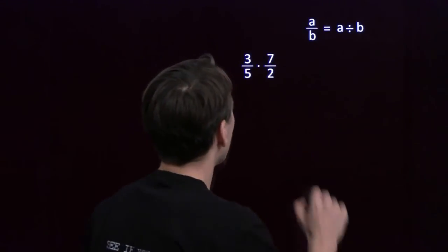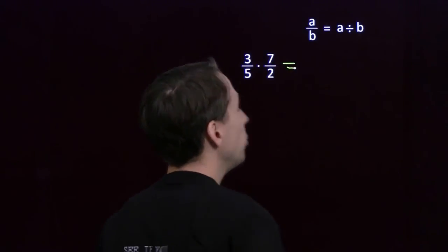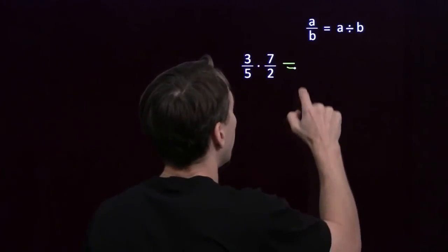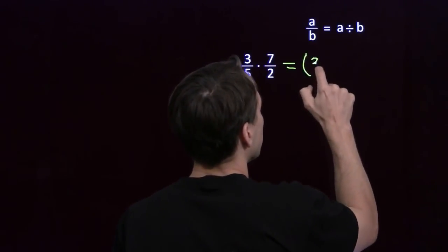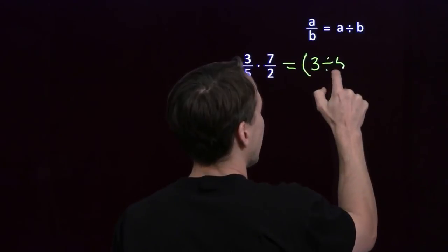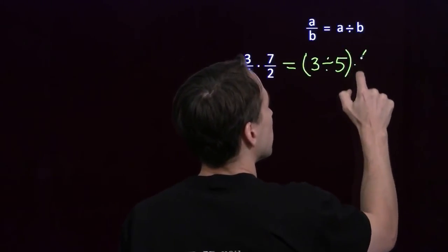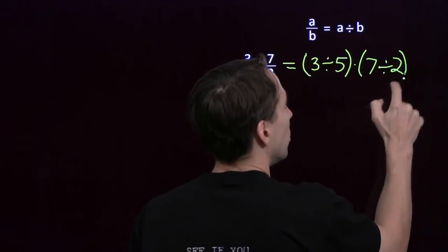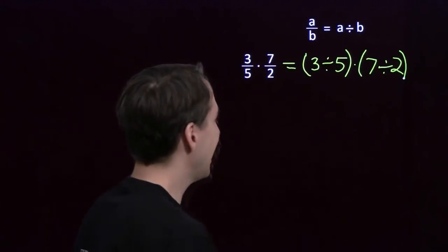Let's try actually multiplying two fractions instead of a fraction times an integer. Let's try this, and we'll do the same thing, right? Because we have all these nice rules for division and multiplication. We'll write this as a division, 3 divided by 5, because that's what a fraction is, times another division.